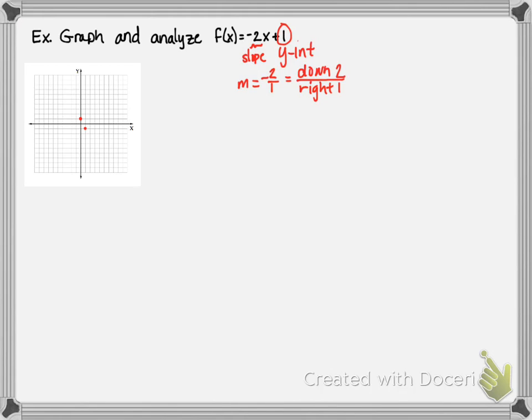So I'll go down 2, right 1, and put a point. And I can keep doing that to get some more points. And then I can draw in a line. So here is our graph of f(x) = -2x + 1.